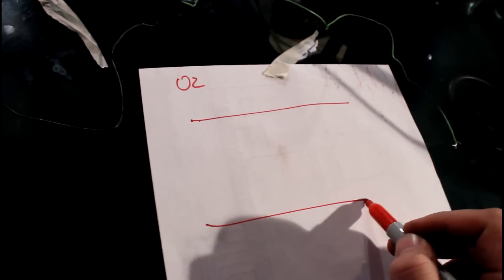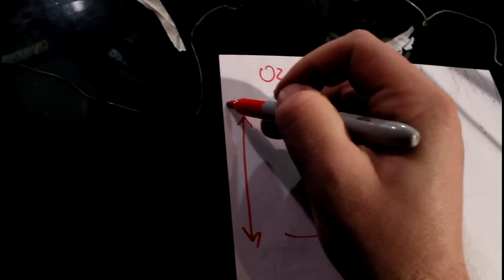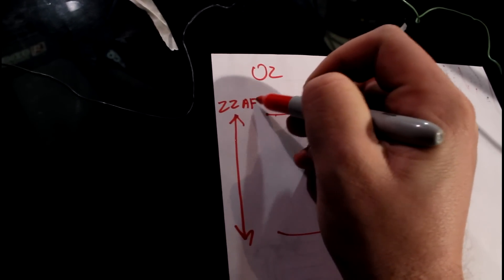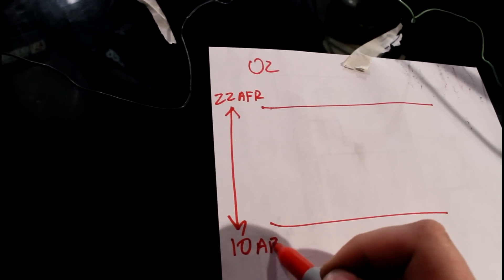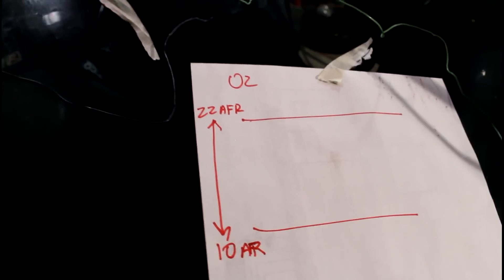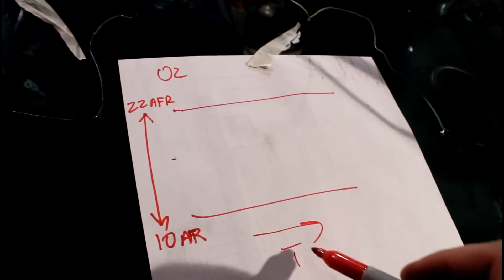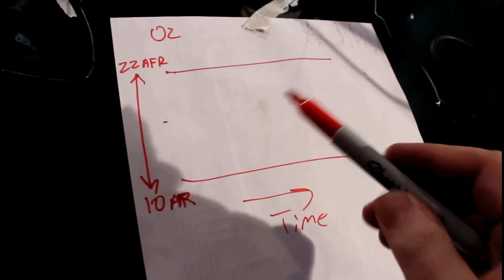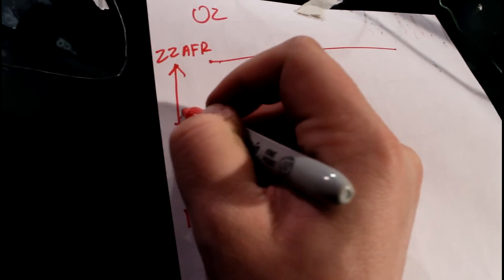Alright, so real quick the difference between an actual narrowband and a wideband O2 sensor. If you consider your ratio is here. So you've got about 22 AFR down to call it like 10 AFR. So this is how much fuel you have. So if you're cruising along in this axis here it would be time. So if you're cruising along and your motor is running here we'll call this 14.7.